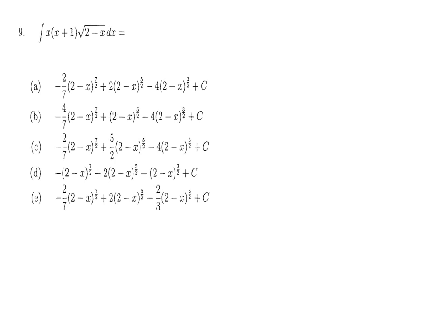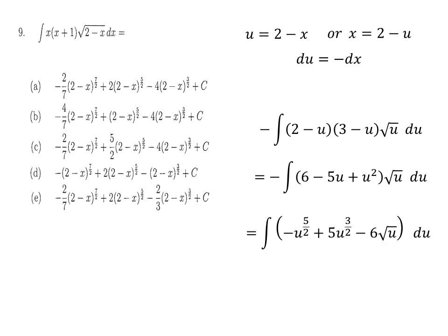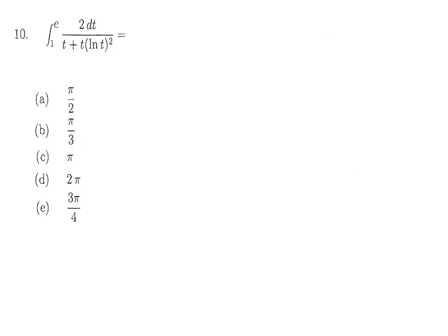For question 9, we use substitution. Let u = 2 − x, so x = −u and du = −dx. Substituting into the integral and simplifying gives a polynomial expression. Applying the power rule — adding 1 to each power and dividing by the same number — then substituting back the original variable gives option A.